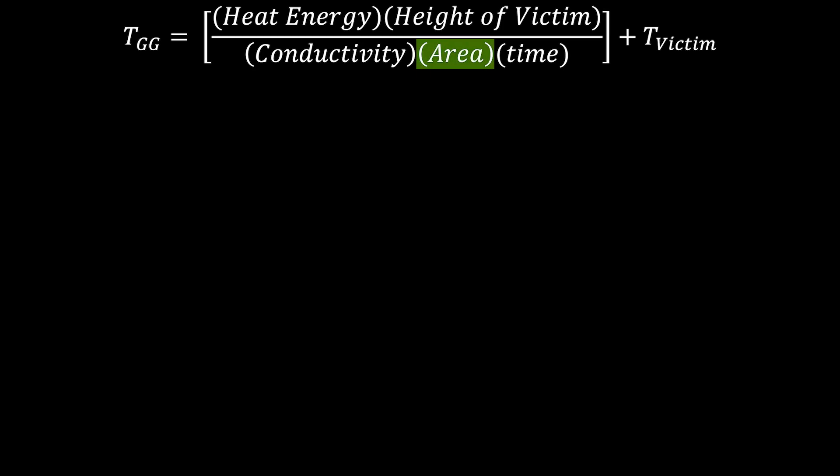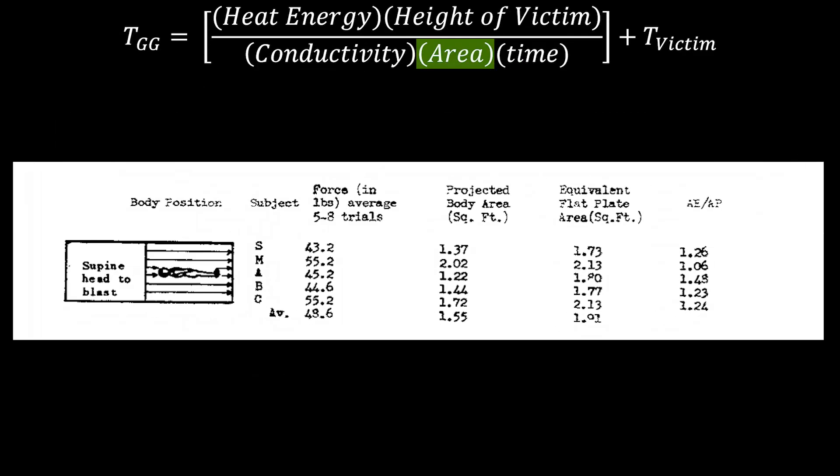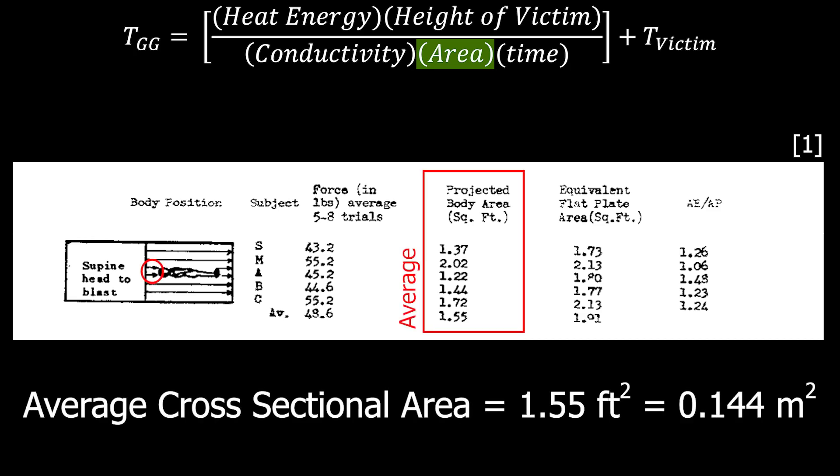Next, we need to find the cross-sectional area. But what is that? Well, if you look at a person from above, then imagine drawing a line around what you could see, creating a little shape. The cross-sectional area would be the space inside that shape that you drew. Simple enough. Luckily, I found a paper that will give us a good approximation of this area. It's about 1.55 square feet, or 0.144 meters squared. Great. We're moving along.